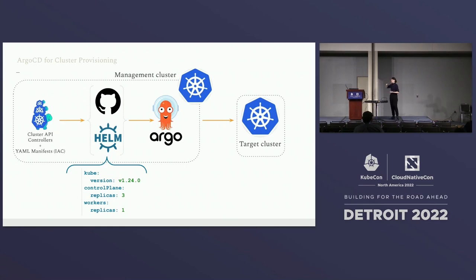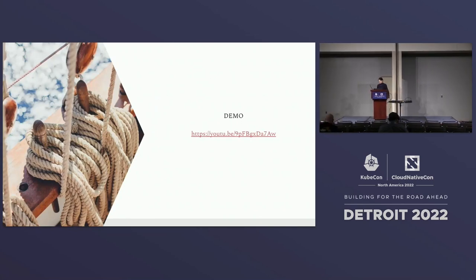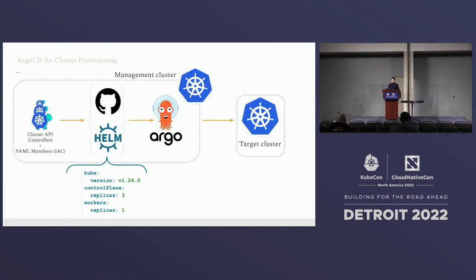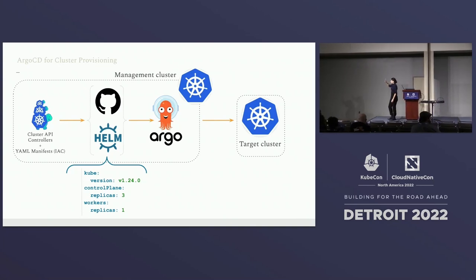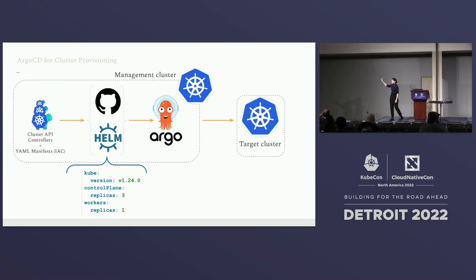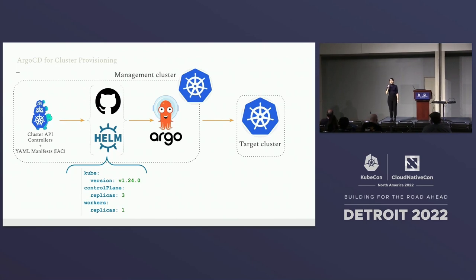We're going to set this in action — it's time for a live demo. In the setup I have a management cluster and a target cluster already provisioned. I am provisioning this using AWS just for ease — I would love to do this on bare metal servers, but traveling with Raspberry Pis across borders is a bit challenging.